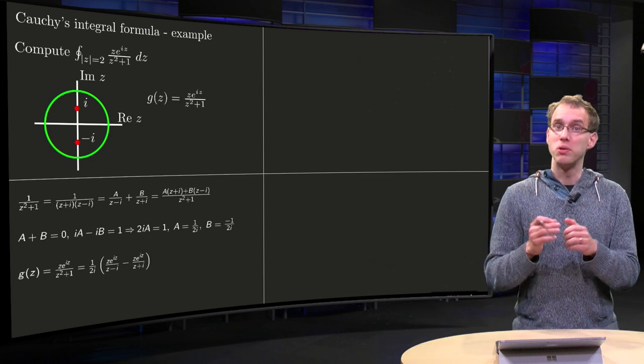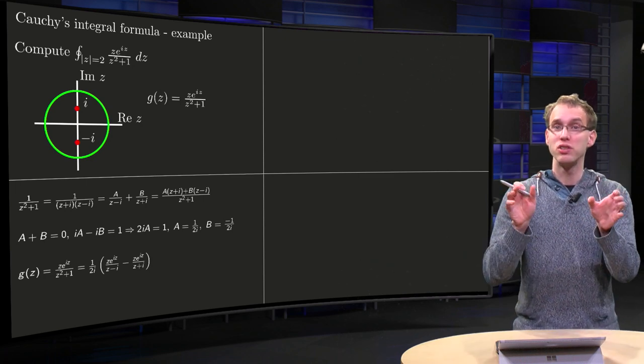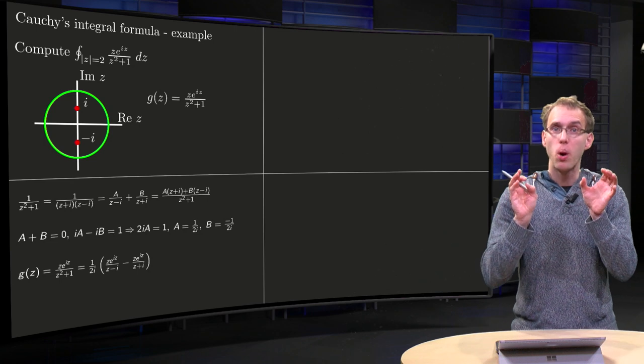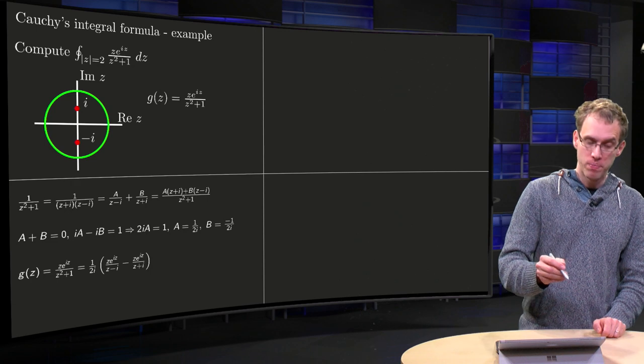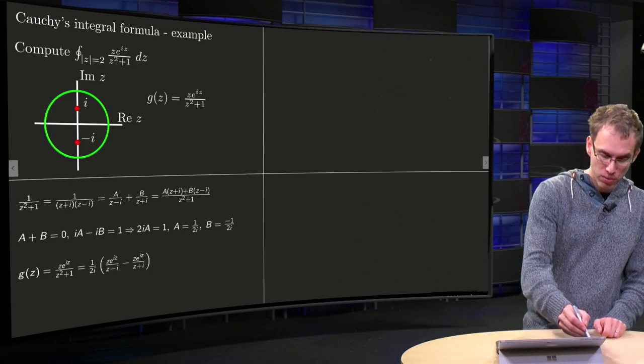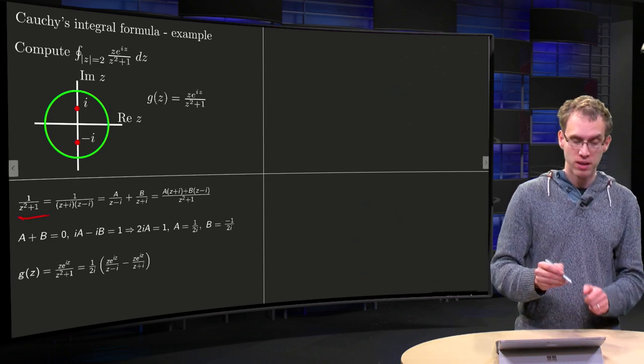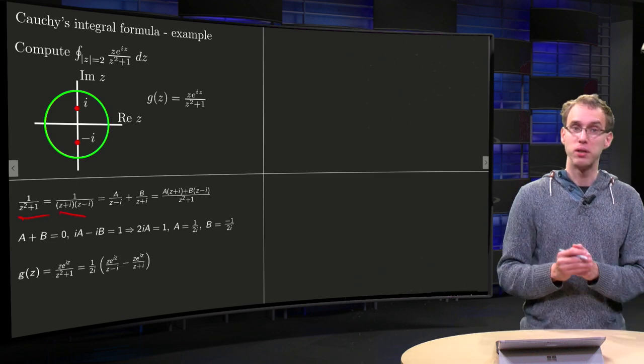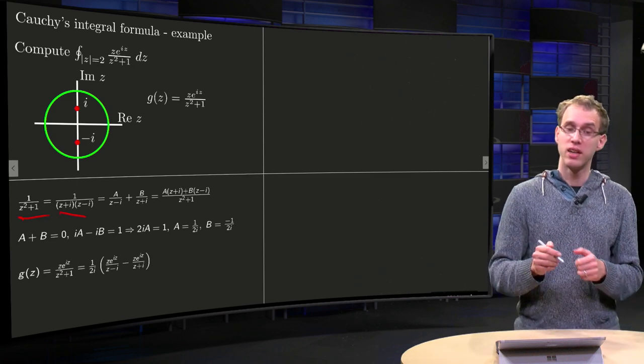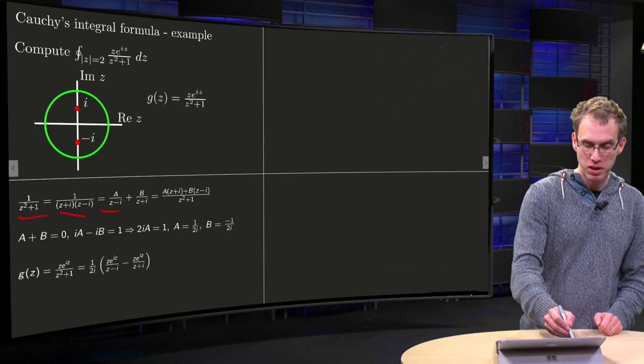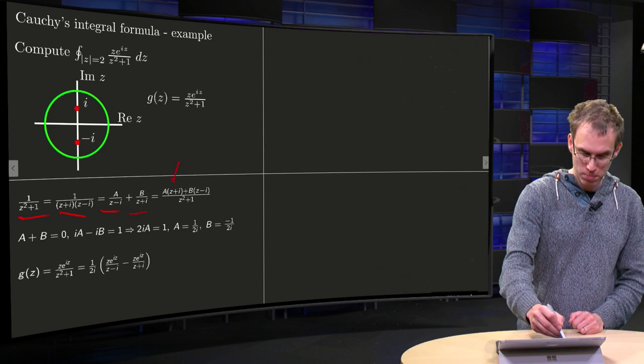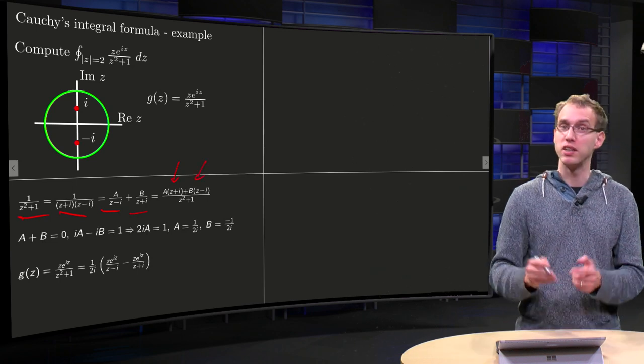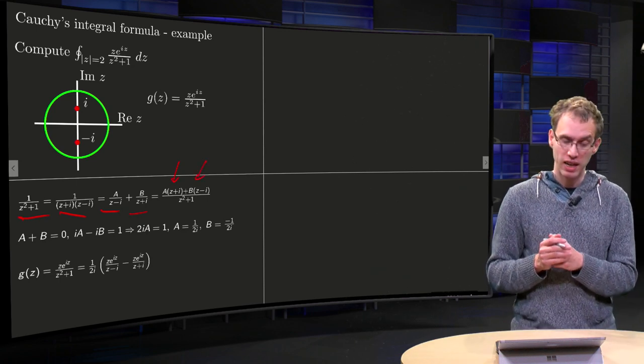One approach is to write your g(z) as two functions which both have only one singularity. How do we do that? Well, we can separate fractions: 1 over z² + 1 equals 1 over (z + i)(z - i) equals A over z - i plus B over z + i. Turns into one fraction, so you get A(z + i) + B(z - i) over z² + 1. To find A and B, then compare.